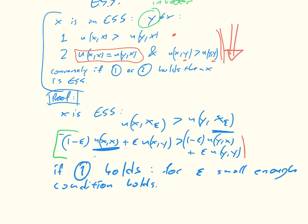condition holds. However, if two holds, so if two holds, we have that x,x and y,x are the same. So this term disappears. Then we've just got this equality here. And what we've got left is exactly this. So then condition holds.